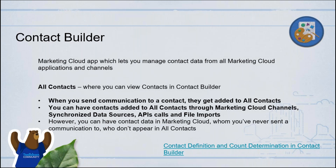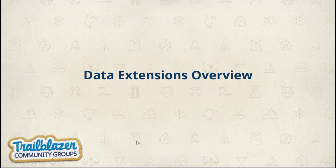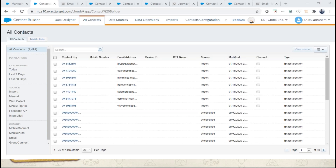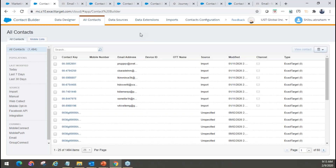I've given a link to an important article from Salesforce — please do go through this when you get the slides. It's about how you define contacts for Contact Builder, what the count is, and how they get added to that All Contacts list. Let me go here and show you the All Contacts in Contact Builder. In Contact Builder you'll see the All Contacts tab. As you can see from the left side, I have close to 1,400 to 1,500 contacts. I can go by channel — I can see how many are in email, how many are in Mobile Connect, Mobile Push, and Group Connect.